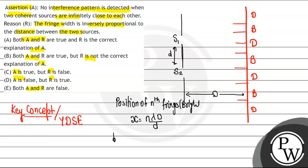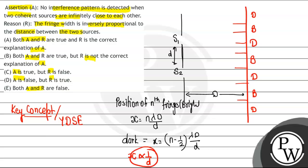For dark fringes, x equals (n minus 1/2)·λ·D divided by d. In both situations, the position x is inversely proportional to d. Also, the fringe width formula is: β equals λ·D divided by d, which applies for both bright and dark fringes.